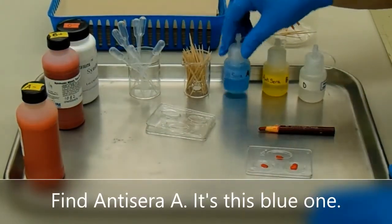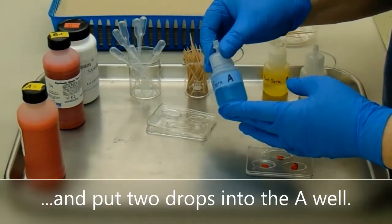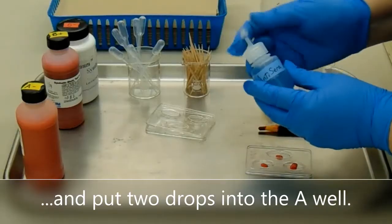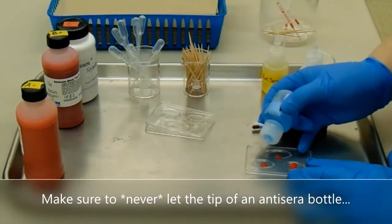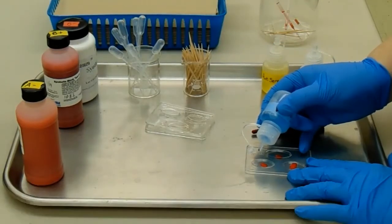Find antisera A, it's this blue one, and put two drops into the A well. Make sure to never let the tip of an antisera bottle touch the blood drop.